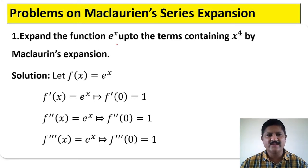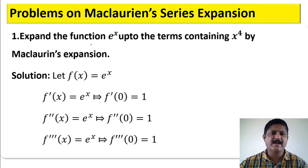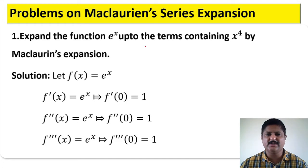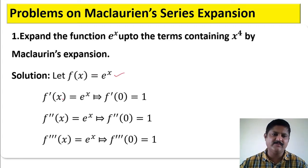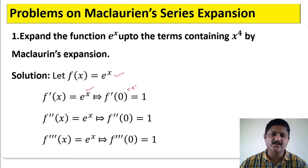Now we expand some functions using Maclaurin series expansion. The first problem is: expand the function e to the power x up to the term containing x to the power 4 by Maclaurin's expansion. Let f(x) equals e to the power x. Differentiate this, we get f'(x) equals e to the power x itself. Therefore f'(0) equals e to the power 0, which equals 1.